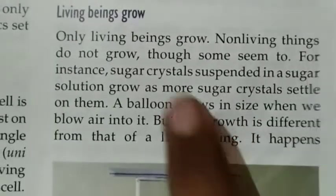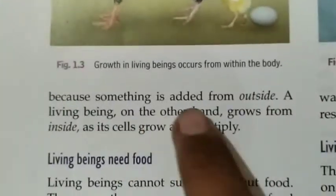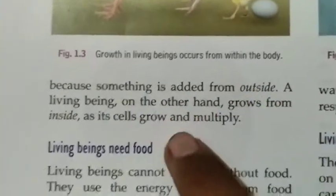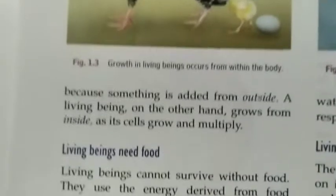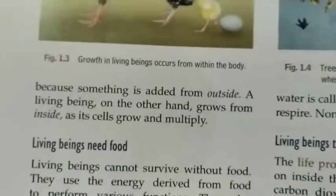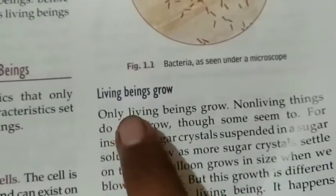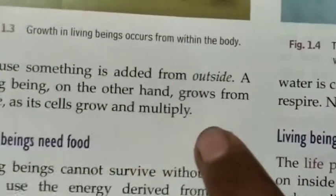You will write from: 'Only living beings grow' to 'grow and multiply.' Living beings grow from within, whereas in non-living things something is added from outside. This is the answer of question number one.